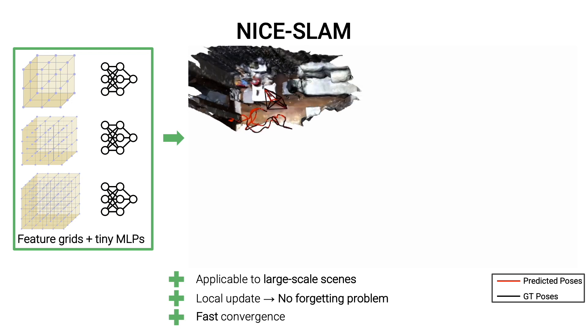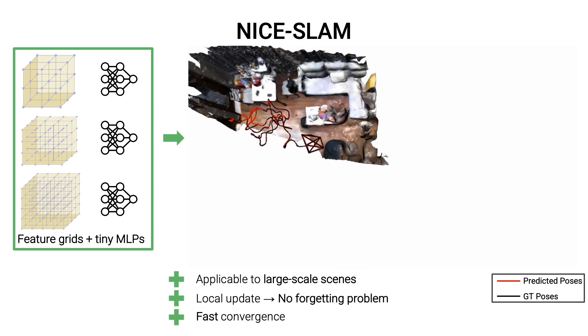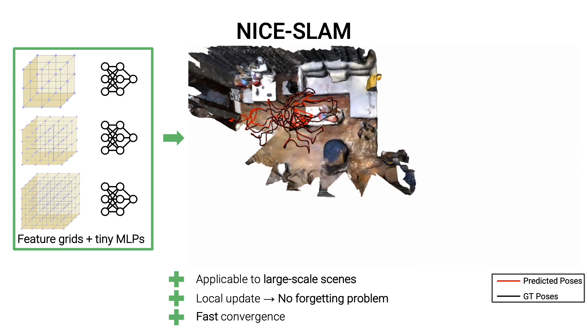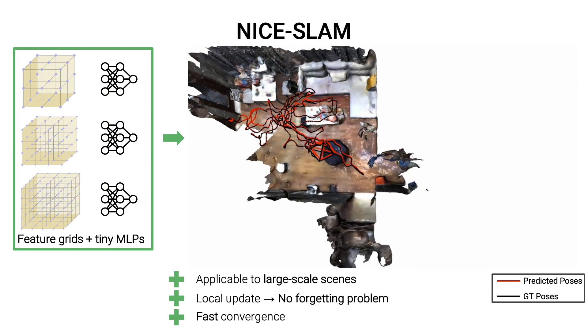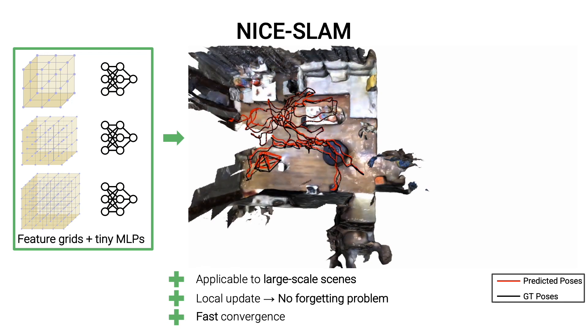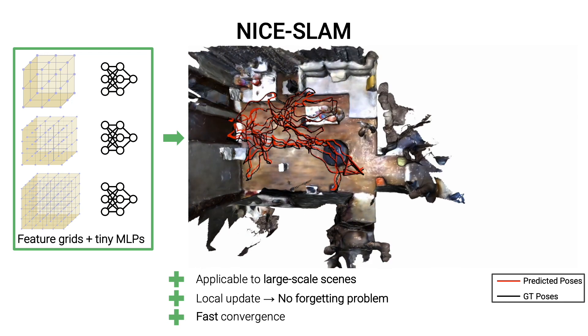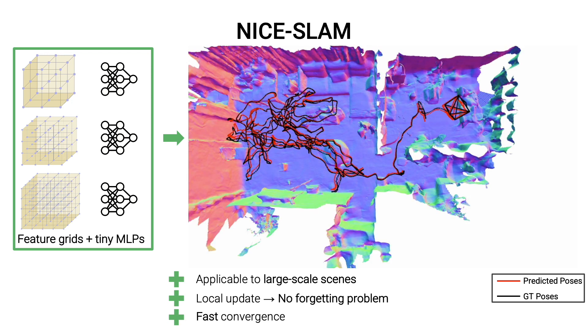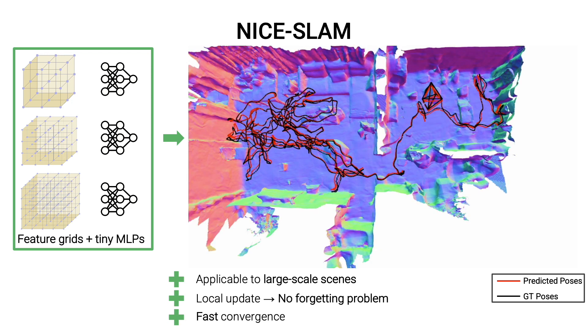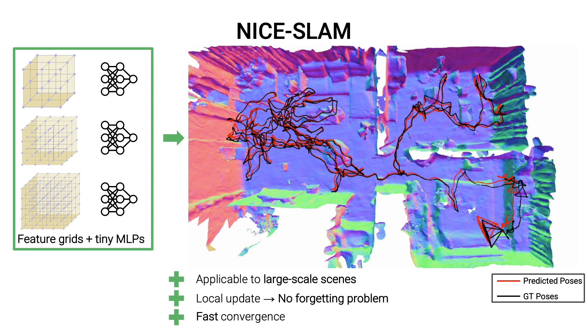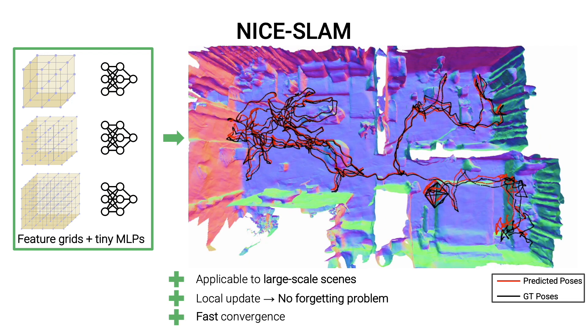In contrast, we made a simple yet very effective change to the scene representation. We now optimize the hierarchical feature grid and incorporate inductive biases of pre-trained tiny MLPs at different spatial resolutions. With this change, Nice Slam works well on large-scale indoor scenes, resolves the network forgetting problem, and also guarantees less runtime and fast convergence.